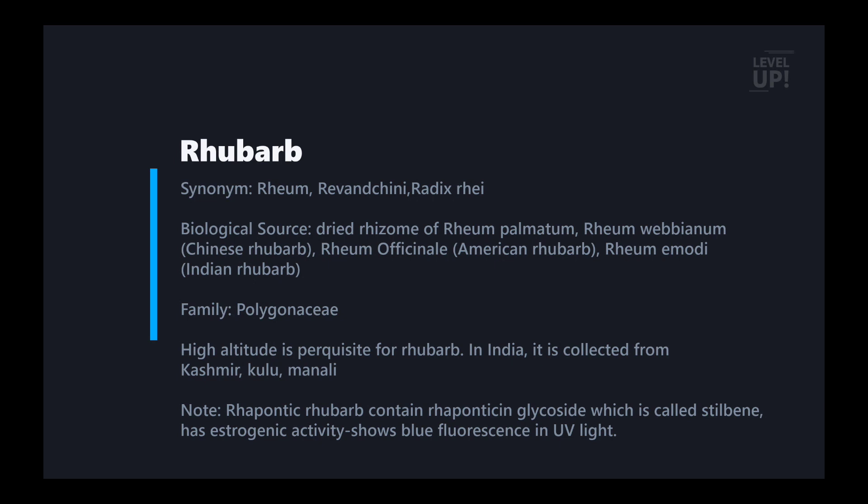This drug is very important. Obviously, I study all the synonyms in the book. Now I am starting our basic analysis. The name is dried rhizome of Rheum palmatum and Rheum webbianum and Chinese rhubarb. We use Rheum officinale commonly. We use the American rhubarb and Rheum emodi, Indian rhubarb. This Rheum emodi is not official.